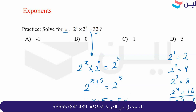So x plus 5 equals 5, which means x is equal to 0. That is the only solution.